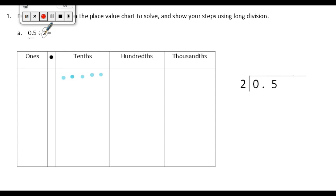So think of it this way, how many groups of 2 do I have in 5 tenths? I'm going to partition my place value chart into those 2 groups.